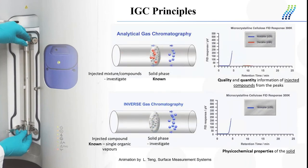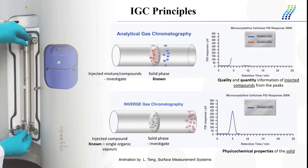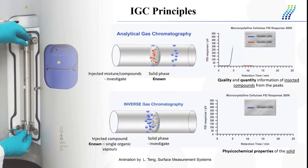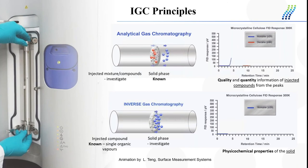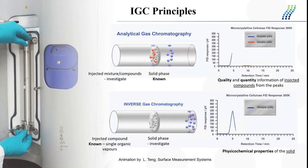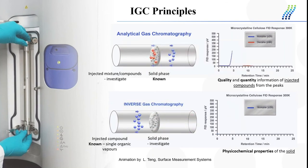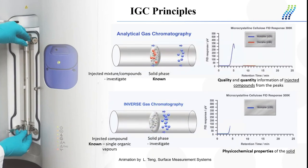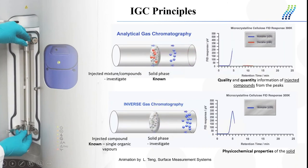This slide shows the difference in principle between analytical GC and IGC. While GC is used to get quality and quantity information about injected compounds, IGC is used to get physicochemical information about the solid material packed into the column. Single pure organic probes are injected onto the column, and the retention time of the different organic probes is measured, which indicates the interaction strength between the surface and the probe. It can also be used to determine different physicochemical properties of the solid material in the column.